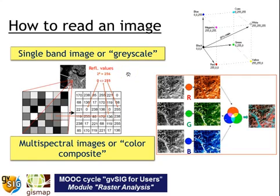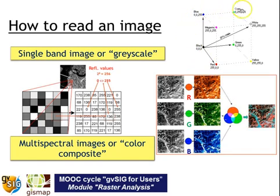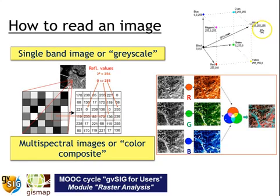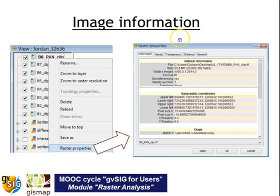We can also combine single band images into color composite images by placing different wavelength images in the red, green, and blue channels, providing us with color images. Complete black is zero for all three channels, white is 255 for all three channels, with all different combinations in between. When we load a single band, for example band number one, we can view information about it.